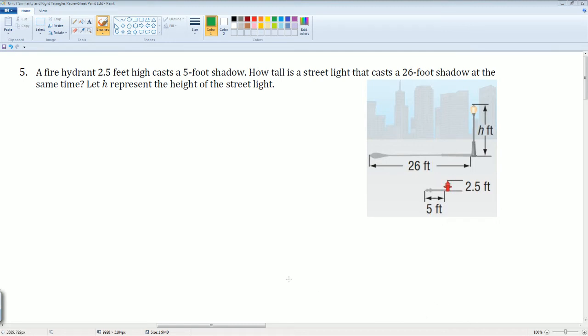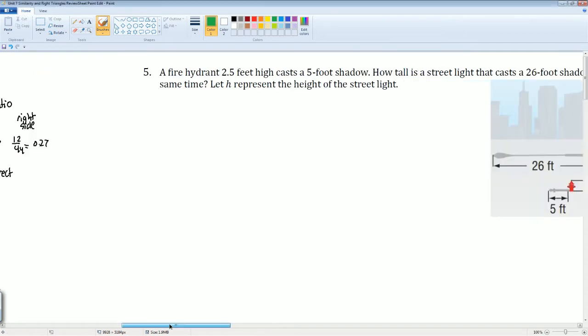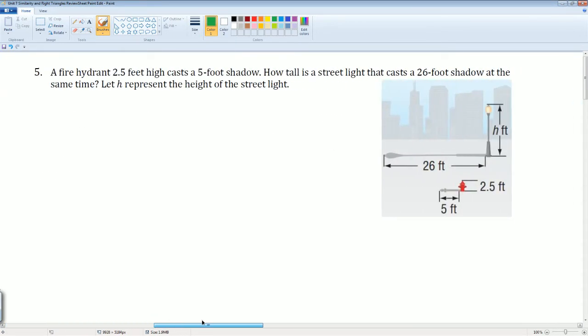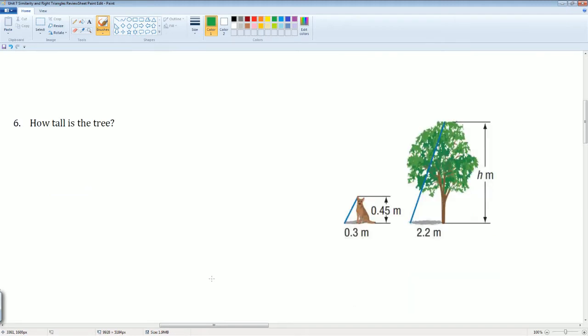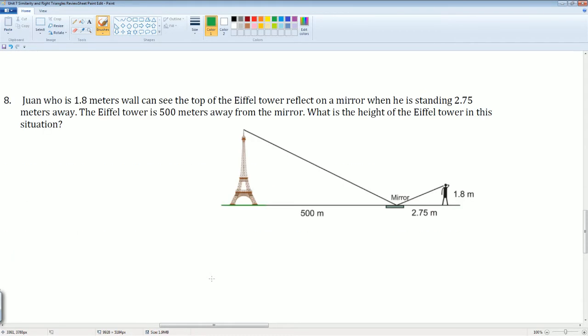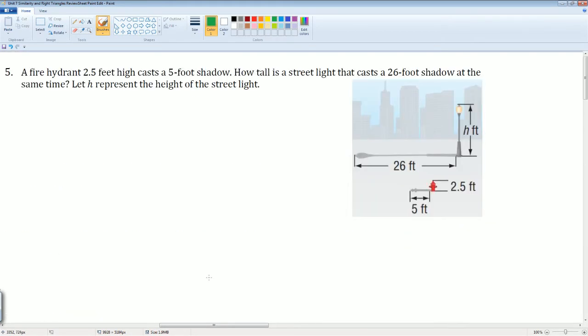Welcome to the IM2 review sheet for Unit 7, Chapter 7. Here we are doing page 2, which is the proportion word problems. We're covering 5, 6, 7, and 8 here. So let's go over this.